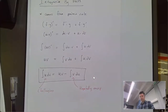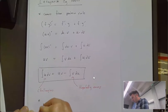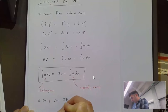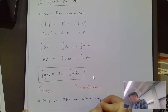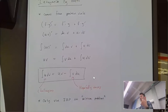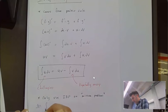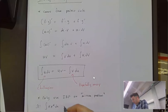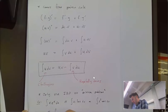Integration by parts comes from the product rule. We typically use integration by parts on what I call a mixture problem — meaning you have a mixture of different types of functions. The types are logarithmic, trigonometric, exponential, or algebraic. Examples include the integral of x·e^x, the integral of x·ln(x), the integral of x·cos(x), or the integral of e^x·sin(x). All are mixtures of different function types.